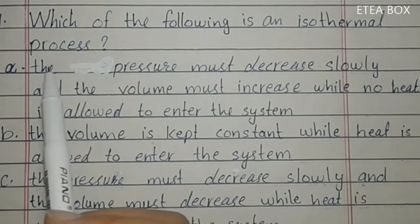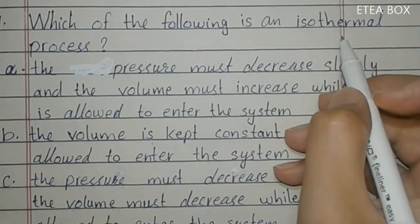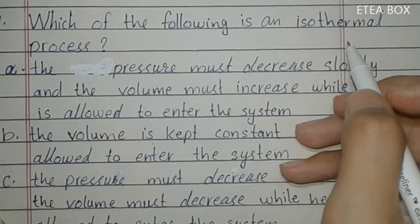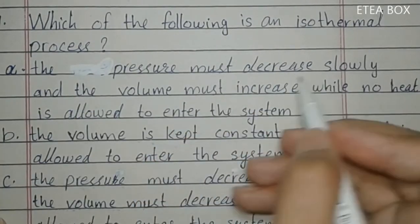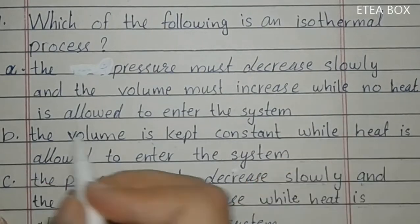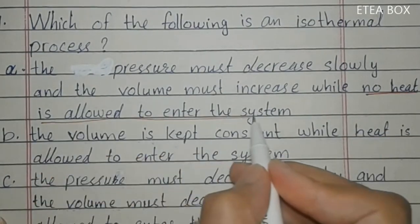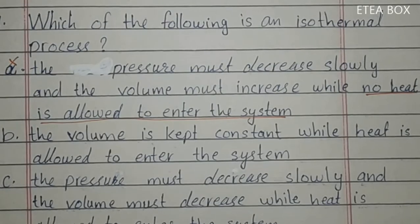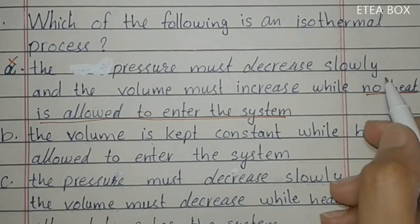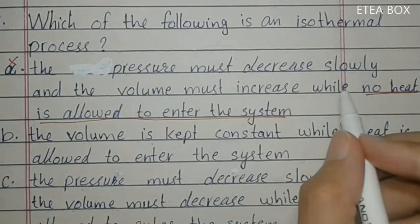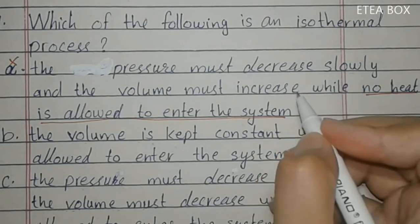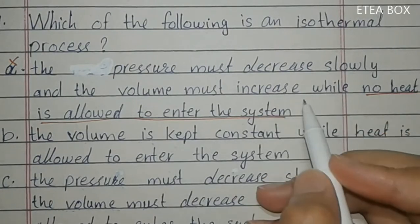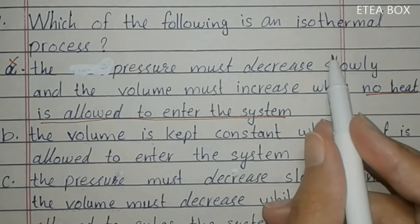Ninth MCQ: which of the following is an isothermal process? An isothermal process is one in which temperature remains constant — pressure and volume change but temperature does not. Option A says pressure decreases while no heat is allowed to enter the system — this is incorrect for isothermal, because in isothermal process heat does enter. When pressure decreases the volume increases, temperature would drop, so heat enters to stabilize the temperature and keep it constant.